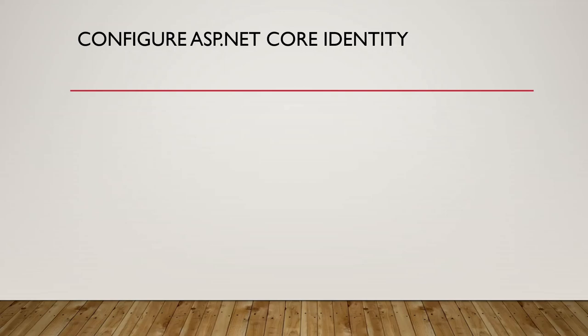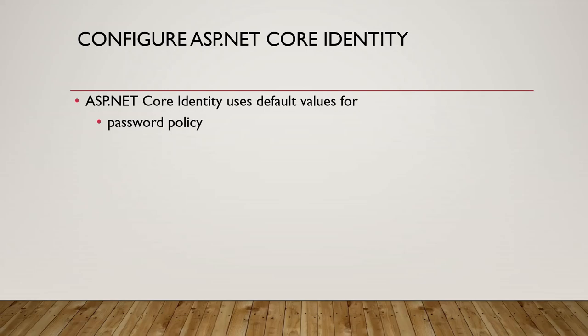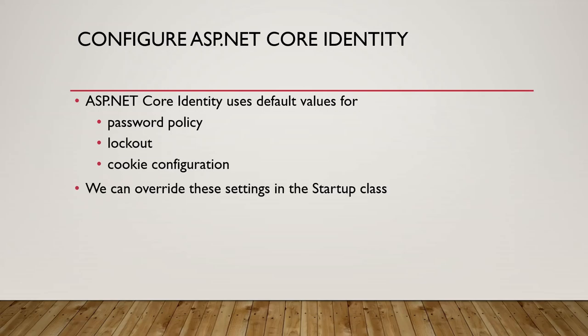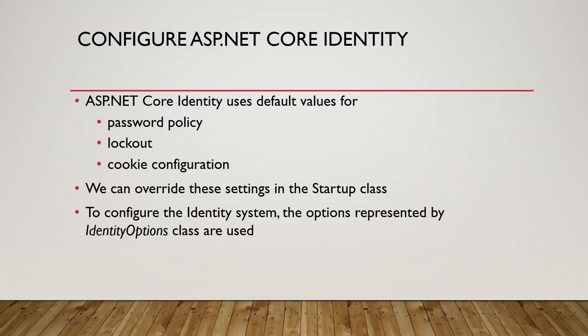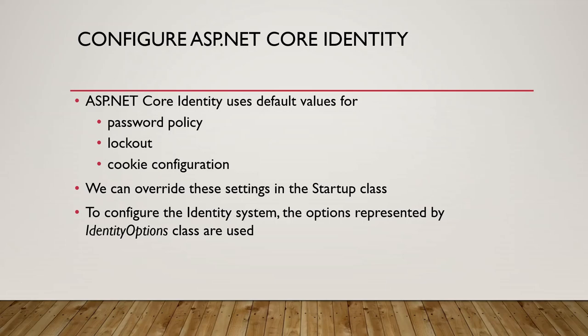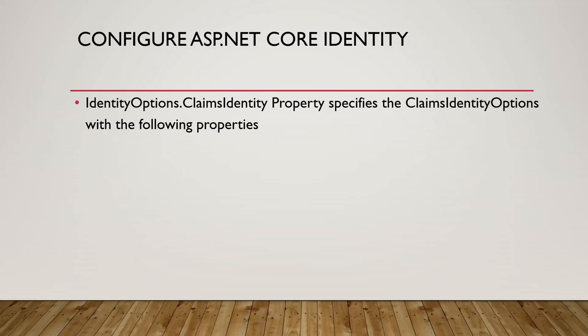ASP.NET Core Identity uses default values for password policy, lockout, and cookie configuration, and we can override these settings in the Startup class. To configure the identity system, the options represented by the IdentityOptions class are used, and we have to call either AddIdentity or AddDefaultIdentity first, then set the identity options.